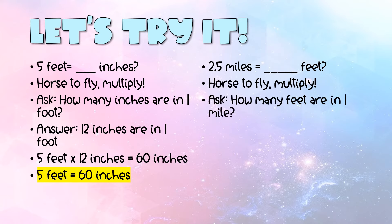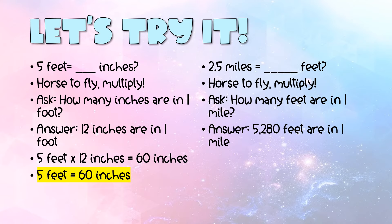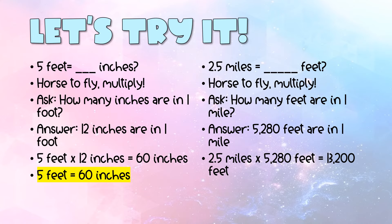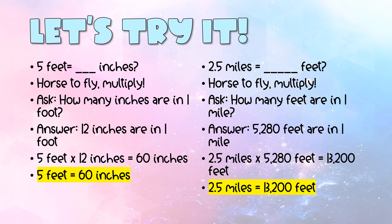So horse to fly, multiply. We ask: how many feet are in one mile? You can check your conversion chart — there are 5,280 feet in one mile. So 2.5 miles × 5,280 = 13,200 feet. If you use a calculator you can get the answer easily, but be prepared to explain your thinking and how to multiply decimals — go back and watch the video I posted on that. Your final answer: 2.5 miles equals 13,200 feet.